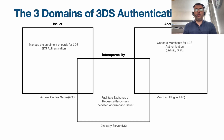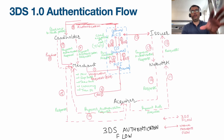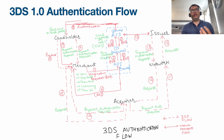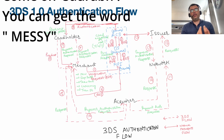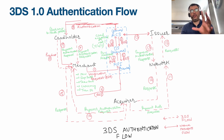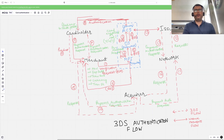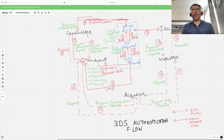I've drawn a diagram that explains the authentication flow and placed it on the Miro board so we can zoom in and do a walkthrough. Let me tell you a few things about how to read this flow. You can see steps written from 0 through 14 or 15 — these are the set of steps that are part of both the authentication and the authorization of the payment.